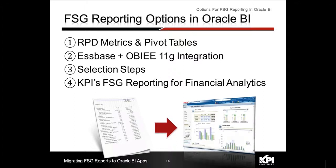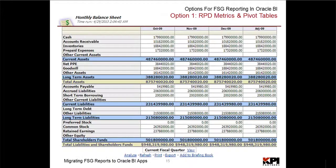I will now review three options that are currently available without the KPI FSC reporting product, and talk through what they do, how they work, and what some of the limitations are. The first option is a sample that is actually available in BI Apps in its out-of-the-box deployment.